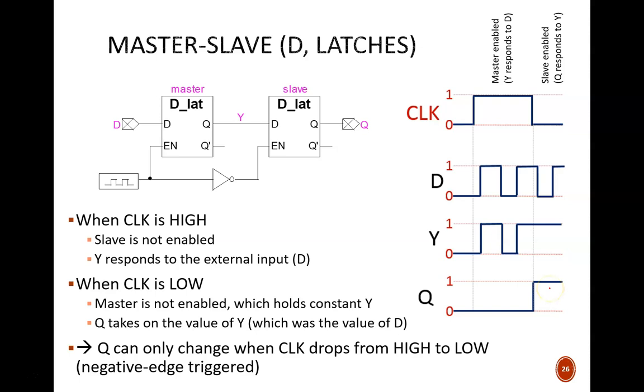Taken as a whole, this is a negative edge-triggered D flip-flop. Whatever the value of the input is just before that falling clock edge will be the value that is passed through to the output. If we instead want a positive edge-triggered flip-flop, we can simply move the NOT gate to the master enable line.